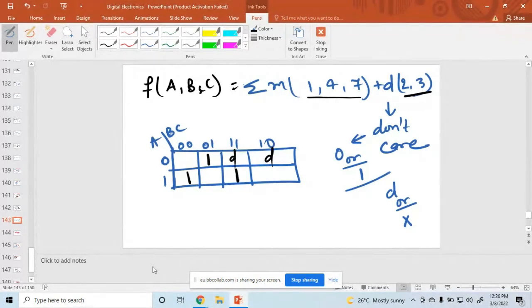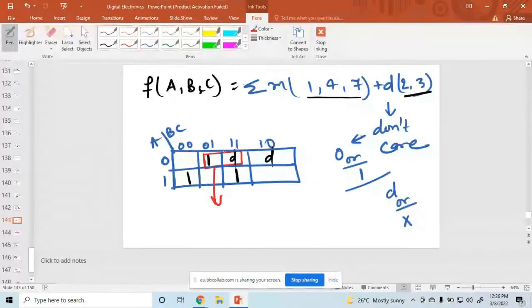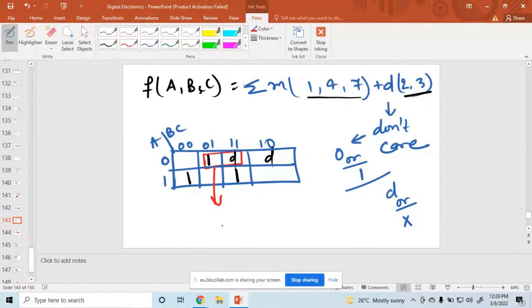Now we start the pairing. Is it possible to eight bit? No, this combination is not possible. Four bit combinations - that one is not possible. Then we start the two. You can pair these two using a don't care. When you use that don't care, then pairing of two is possible and the value is A bar.